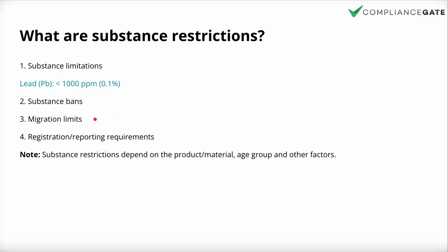Third, we have migration limits. This is a term often referred to in the context of food contact material substance restrictions. Migration can refer to the transfer of substances that occurs depending on certain conditions — when a material is heated, frozen, or comes in contact with certain liquids. Generally speaking, migration limits refer to requirements where substances should not be transferred from, say, a plastic material to the food in a food container.